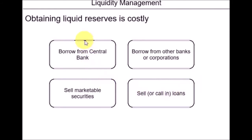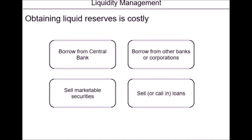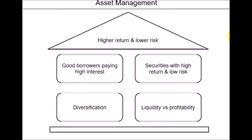However, all of those ways are costly. Borrowing from the central bank or other banks requires paying interest, although nowadays rates are relatively low. Selling securities before maturity means losing interest you could have gained otherwise, and same for selling loans early. Therefore, to avoid these costs, banks want to balance liquidity versus profitability, because liquid assets don't create much profit. When liquid assets are converted into marketable securities or loans, that's when banks can actually increase their profitability.